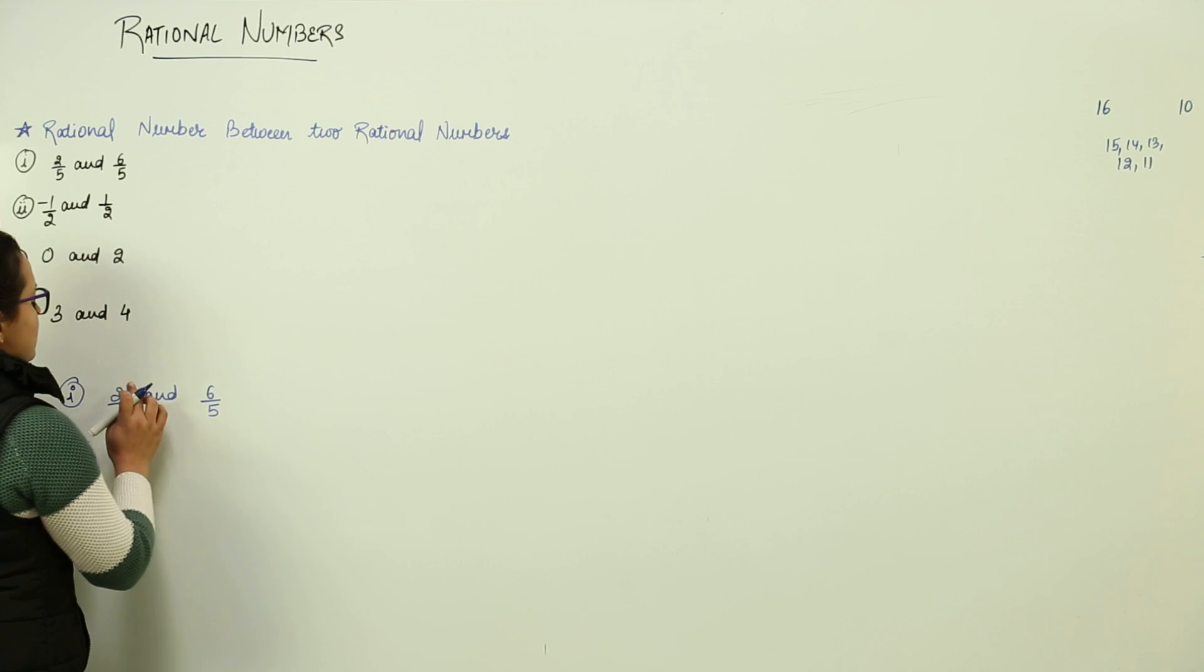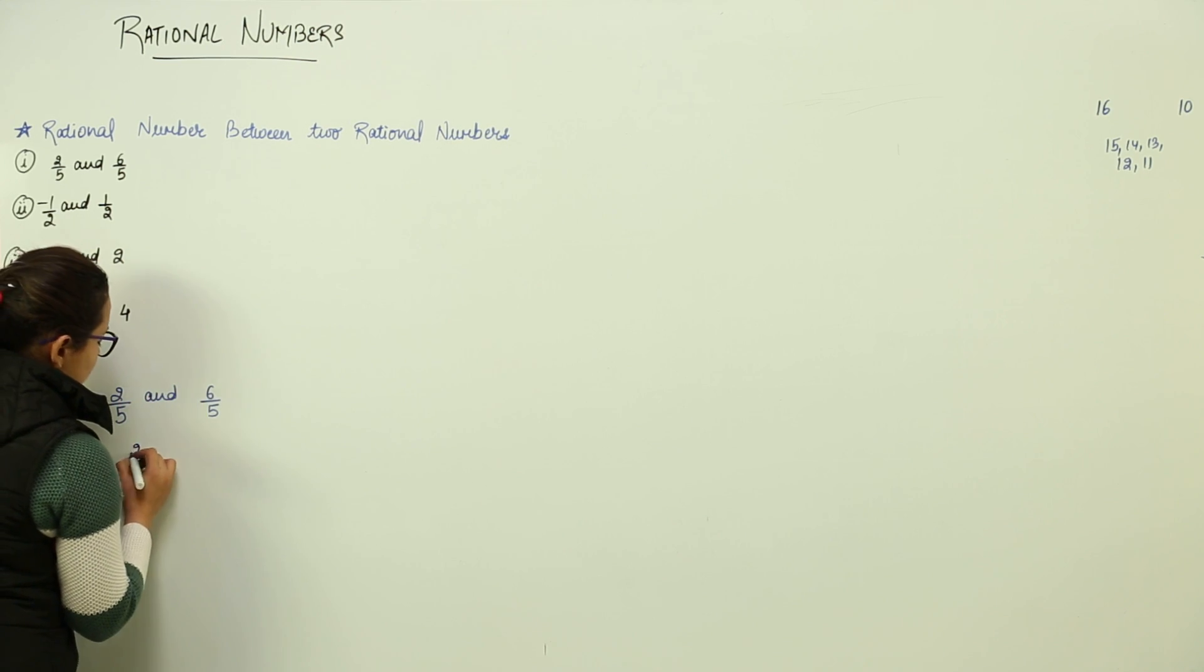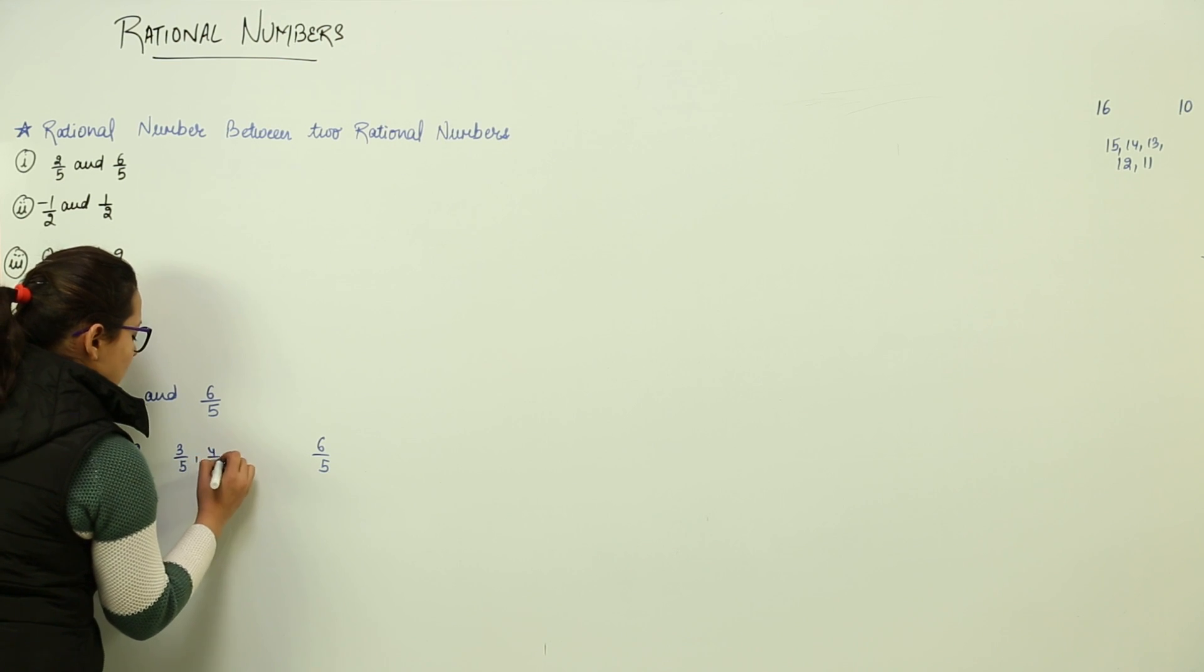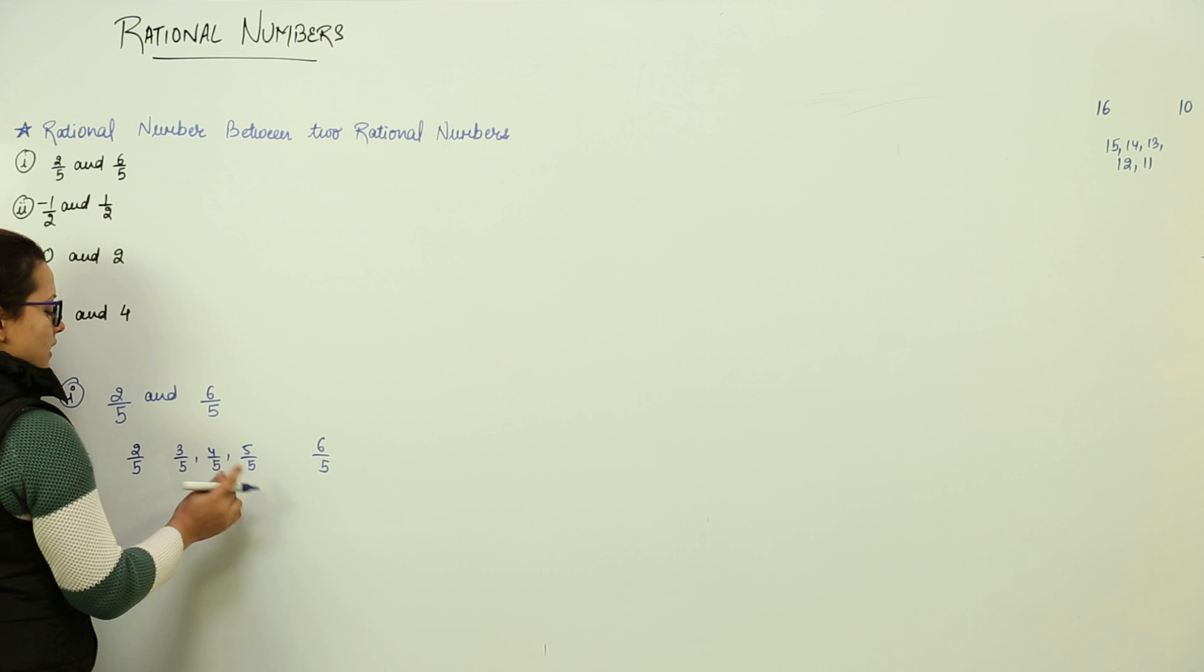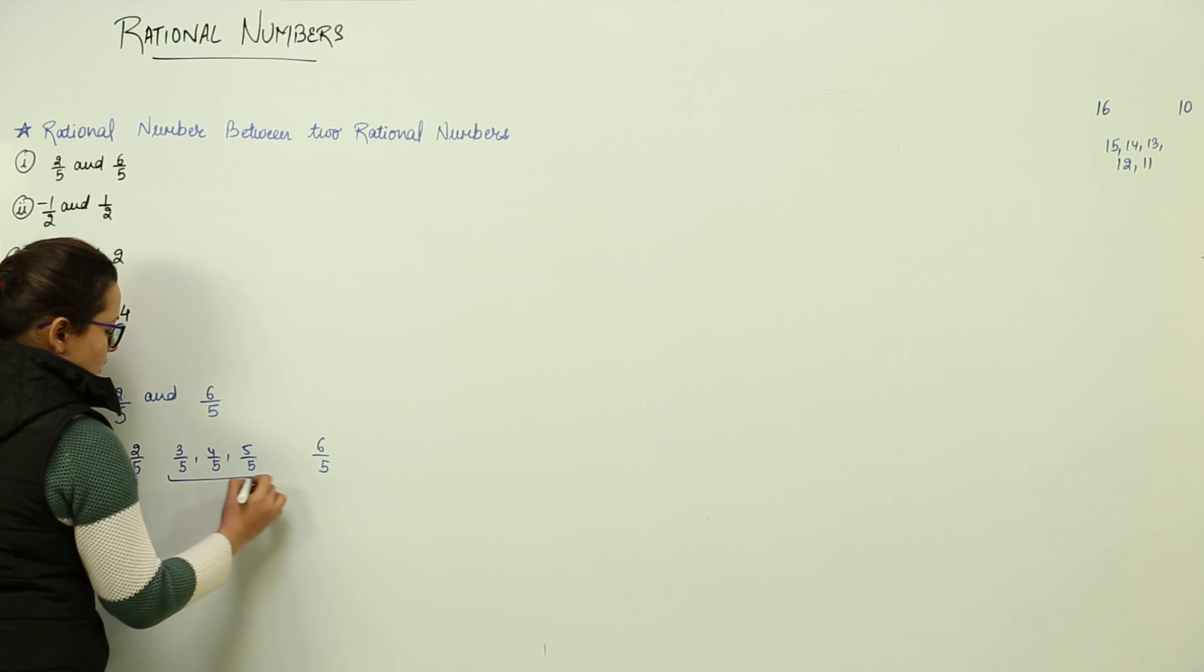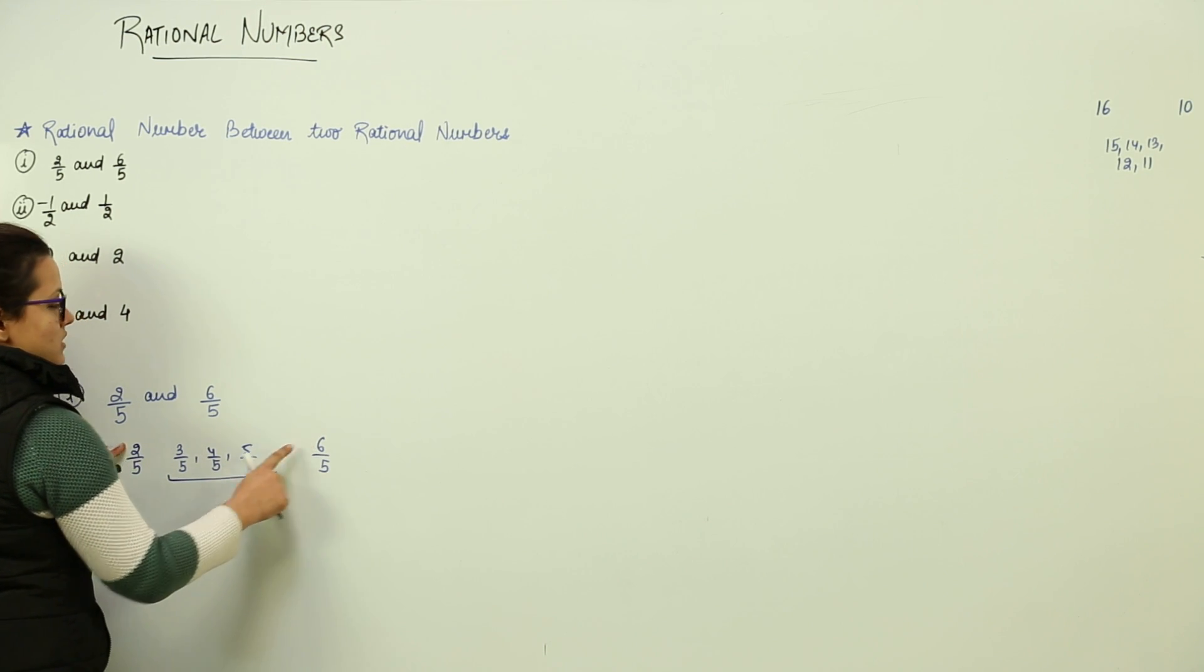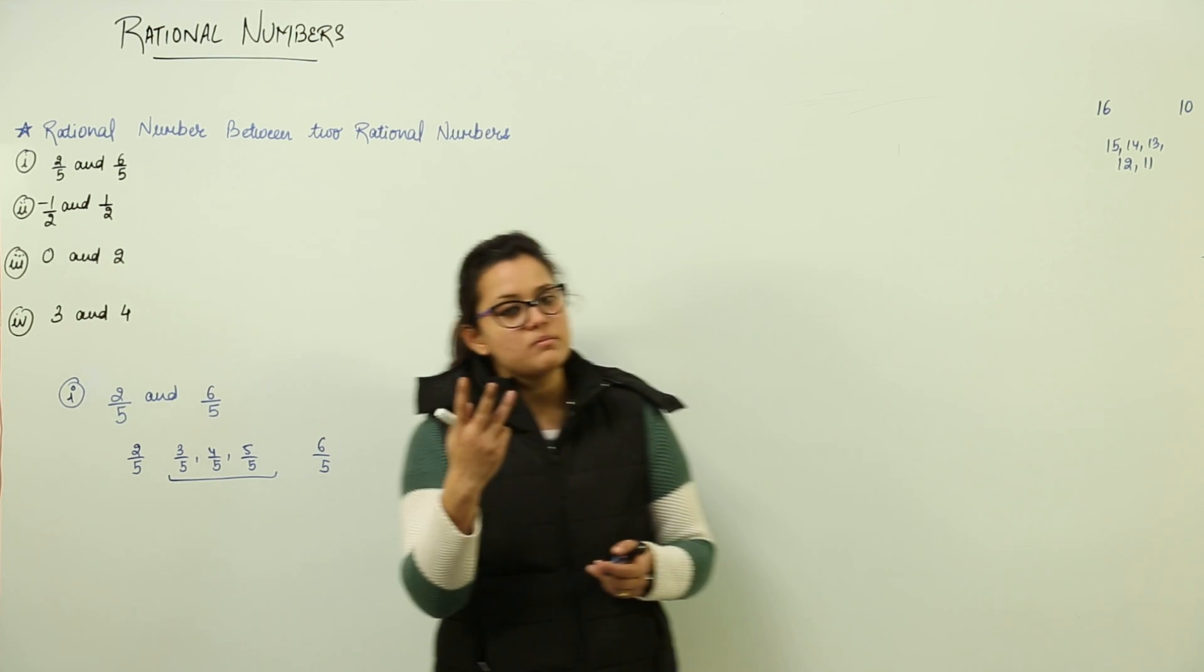Now the numerator says two by five and six by five. Directly we can come to know that two by five and six by five contains three by five, four by five and five by five between them. How did I come to know about them? The denominator was the same. All I was required to do was consider the numerators. The numerator two and numerator six. How many numbers are lying between two and six? Three numbers.